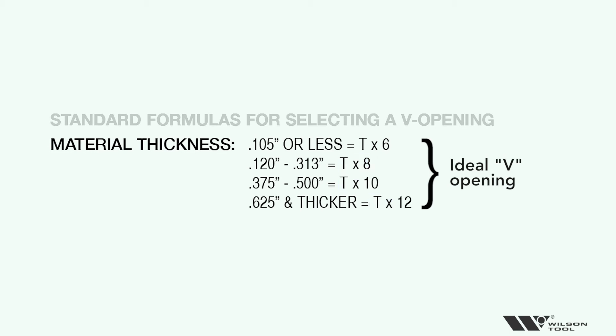As you move into T times 8, you're getting away from that one material inside radius when you airbend. So if you have quarter inch material, understand you're going to have a difficult time getting a quarter inch inside radius airbending.